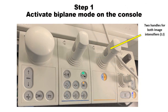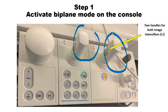So, how do we do it? Step one is to activate the biplane mode in the console and then bring the radiation sources and image intensifiers close to the patient. As you see here, there are two handles, and each of them controls one of the image intensifiers.